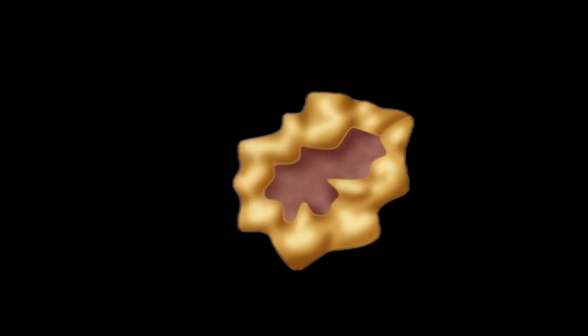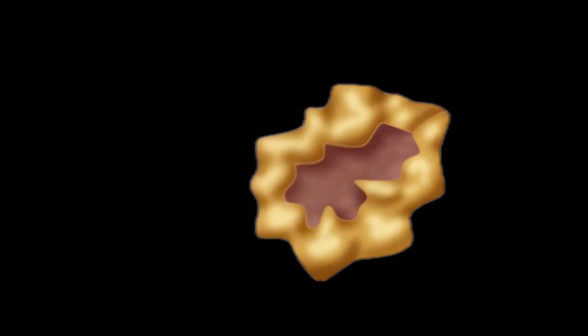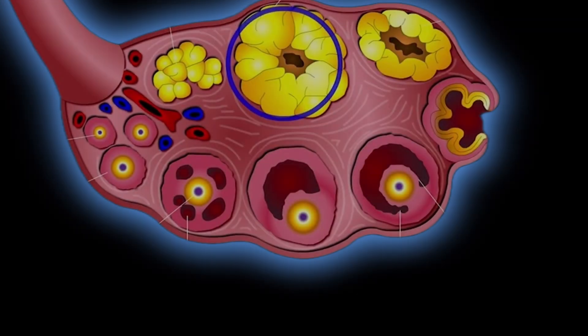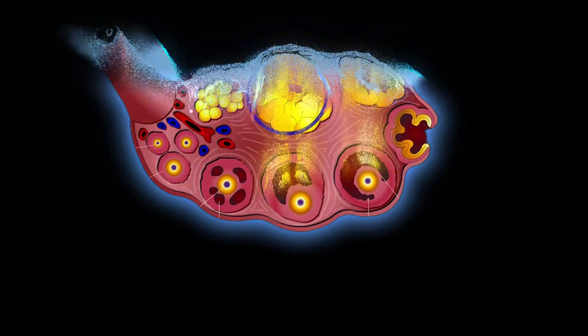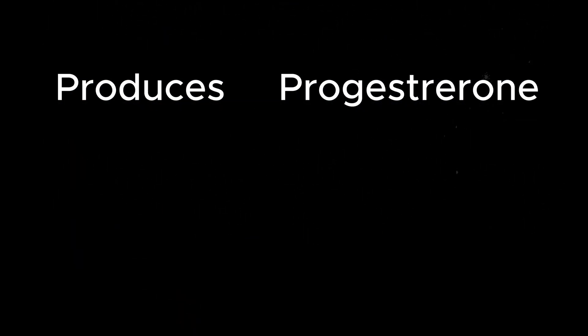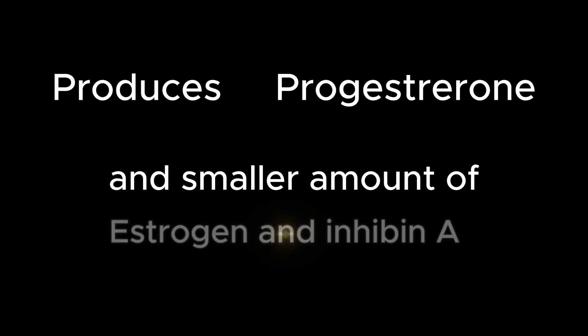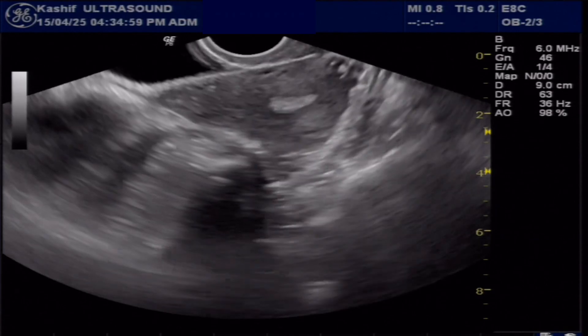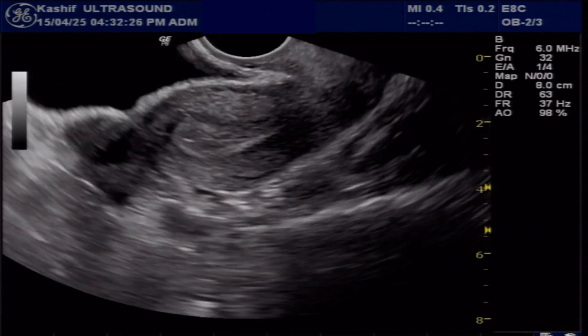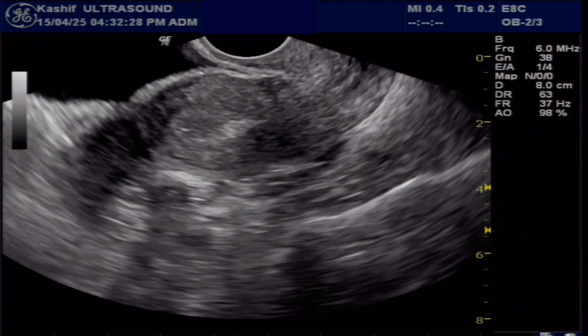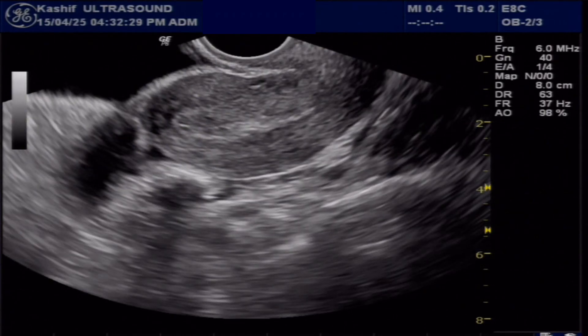The corpus luteum is a vital temporary gland in the ovary that plays a key role in the menstrual cycle and the establishment and maintenance of early pregnancy, by producing essential hormones like progesterone and smaller amounts of estrogen and inhibin. Ultrasound can well monitor corpus luteum growth and regression during the menstrual cycle and in early pregnancy, where it is a normal finding.